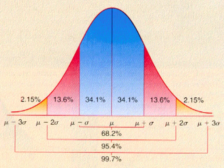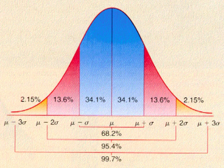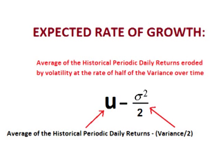We can use this graph, along with the empirical formula, to calculate out the odds of expected future price. To create a normal distribution curve, we take the future expected rate of return and the standard deviation. For the expected rate of return, we use the average of the periodic daily returns, but we erode this value to account for volatility using standard return erosion of the rate of half of the variance over time. Therefore, the expected rate of growth each day — which really means the rate of growth that has the greatest odds of occurring — is the average of the periodic daily returns eroded by volatility at the rate of half of the variance over time.